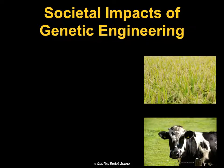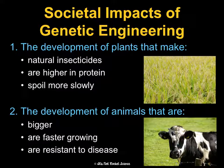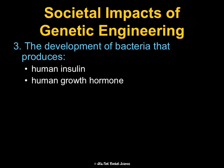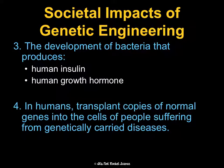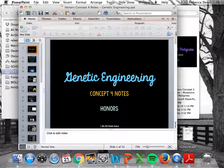There are some positive societal impacts of genetic engineering: we've developed plants that are natural insecticides, that are high in protein, that spoil more slowly, and animals that are bigger, faster, and resistant to disease. There's bacteria that produce human insulin and human growth hormone, and we've made transplant copies of normal genes into the cells of people suffering from genetically carried diseases. There are a lot of great impacts, but there are also some negative ones which we're going to explore together in class.